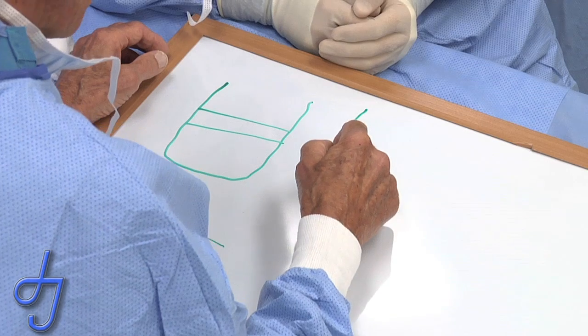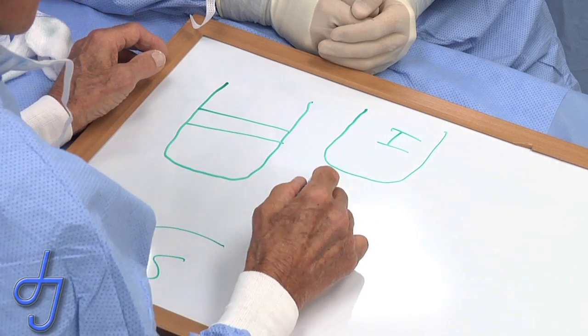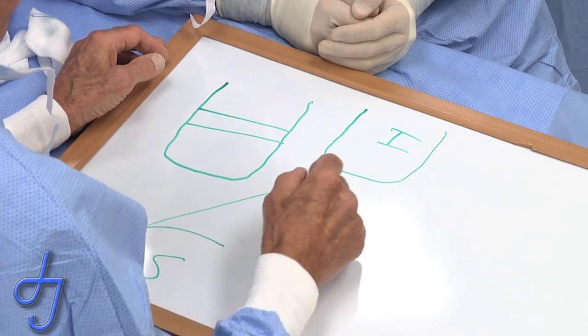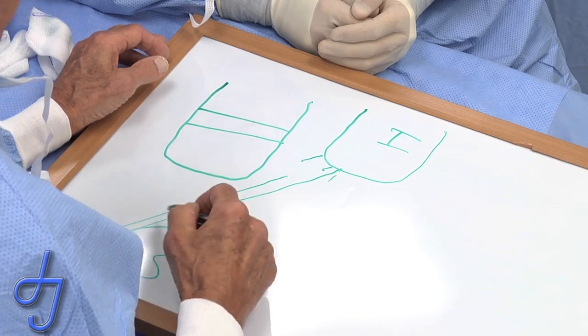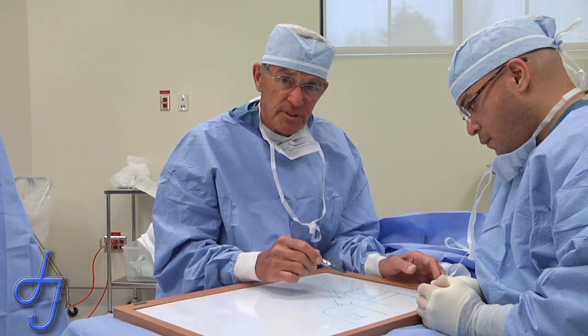Here's the index metacarpal. And the index metacarpal has the insertion of the flexor carpi radialis. And we're going to take only half of the flexor carpi radialis and use the half.